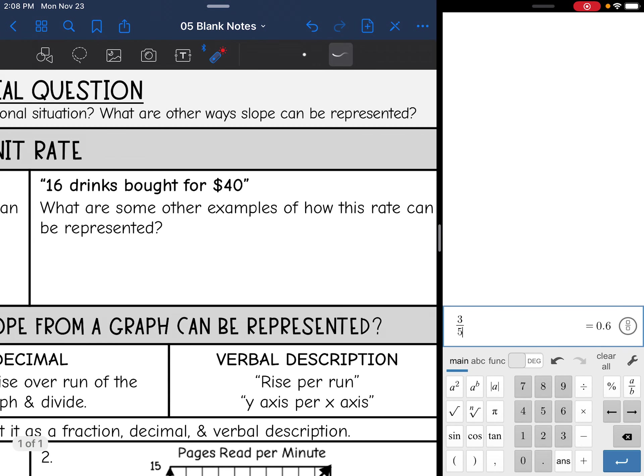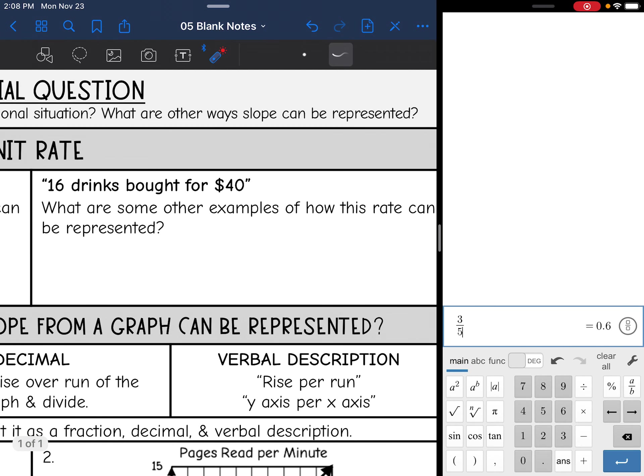Next rate is 16 drinks bought for $40. Let's first figure out the price of one. 40 divided by 16 is $2.50. So that means that one drink cost $2.50.